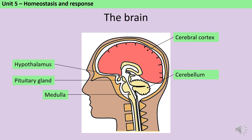You need to be able to describe the function of each of these five parts. The cerebral cortex controls all of the things that you might think of as making us human: our consciousness, our intelligence, our memory, and our language.